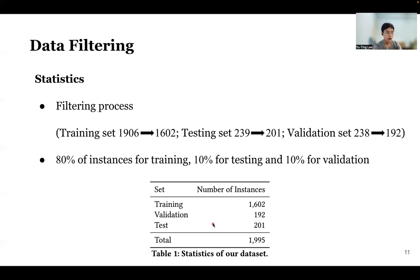This page shows the statistics of the data filtering. Due to the filtering conditions, the number of instances in the training set is reduced from about 1,900 to 600, with proportional reductions in the testing and validation data. We keep 80% of instances for training data, and 10% each for testing and validation.